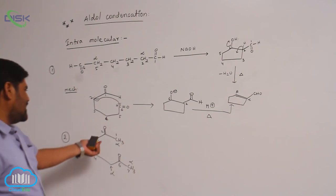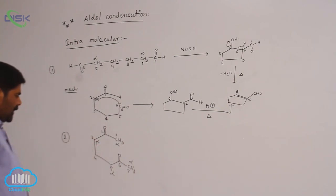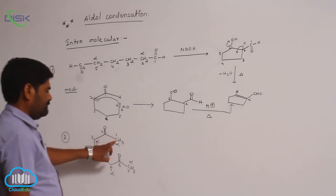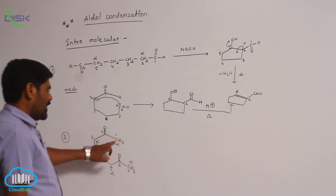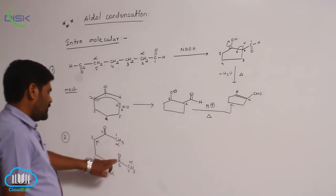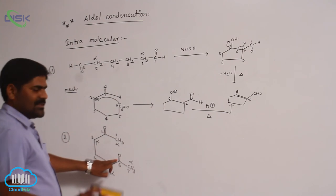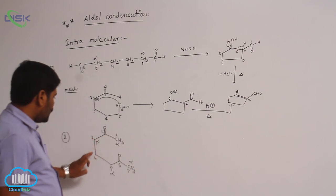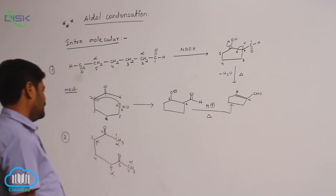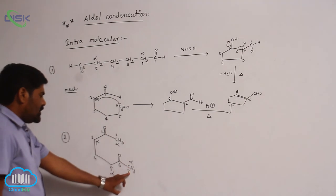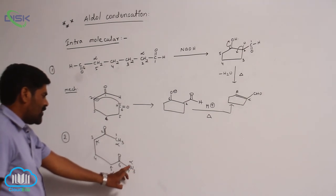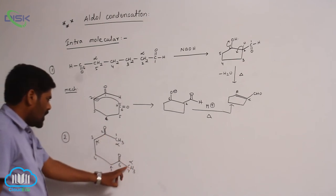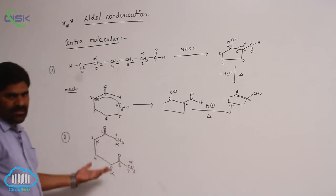Suppose if a carbanion is generated at position 1, it will attack the second carbonyl, giving a six-membered ring, because counting: 1, 2, 3, 4, 5, 6 in the ring. If the seventh carbon carbanion is generated, it will also attack the second carbonyl carbon — again a 6-membered ring. Both are identical products.